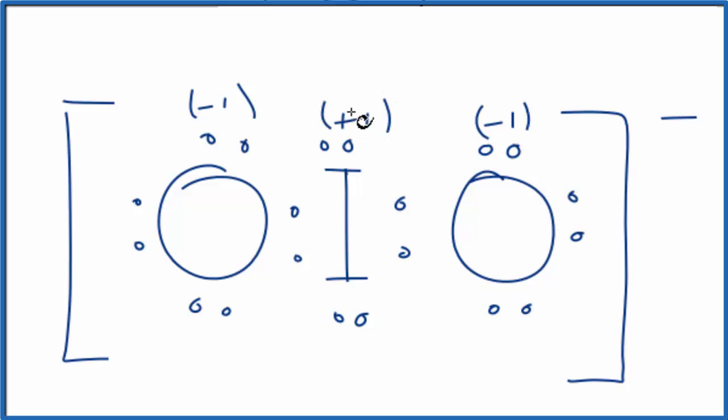We'd really like our formal charges to be as close to 0 as possible, or in this case, as close to the charge on the ion as possible. So we'd like to have a -1.